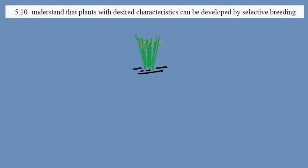IGCSE Biology syllabus statement 5.10: selective breeding of plants. In this image here we have rice, and on the rice there are the rice grains.